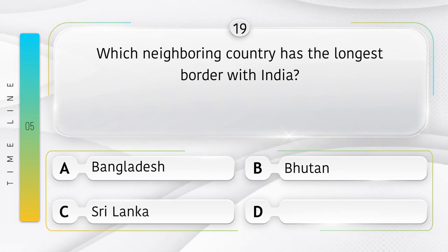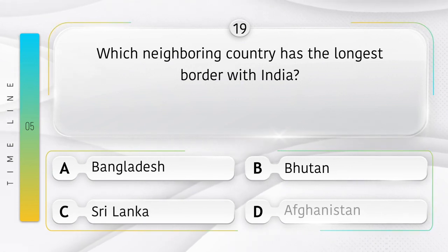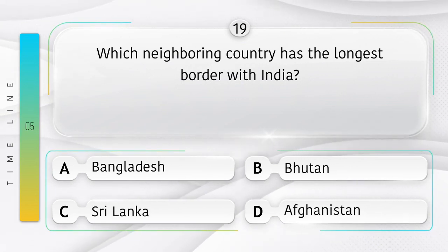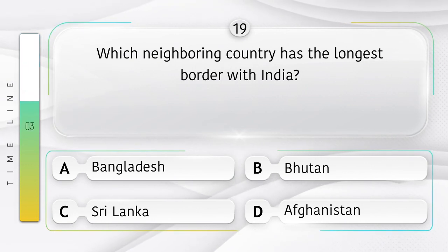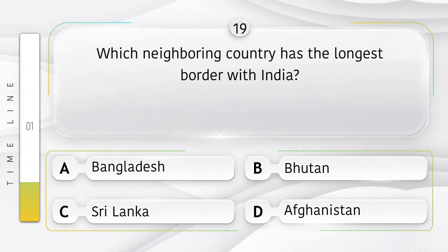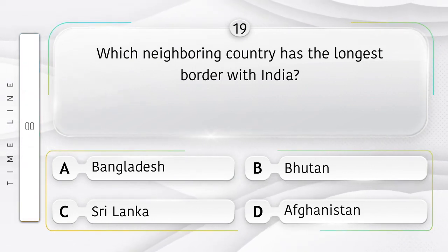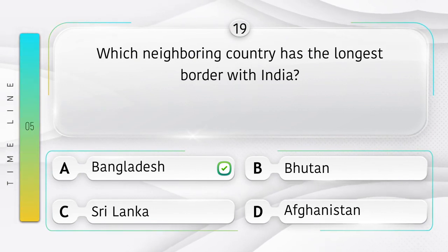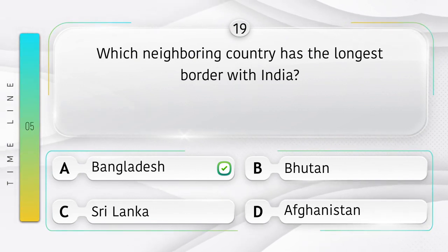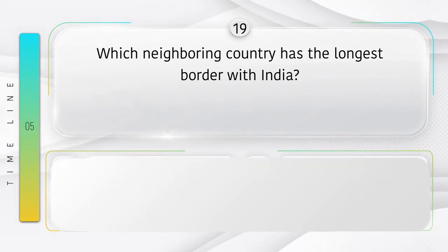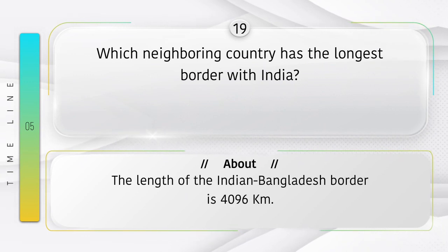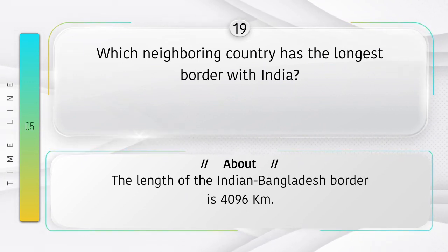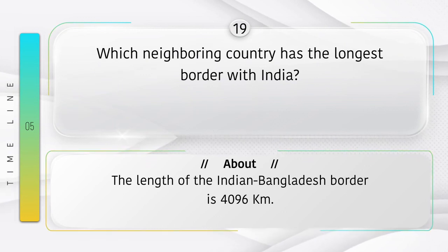Which neighboring country has the longest border with India? Option A: Bangladesh, B: Bhutan, C: Sri Lanka, D: Afghanistan. Answer is option A: Bangladesh. Did you know the length of the India–Bangladesh border is 4,096 kilometers?